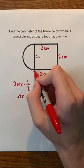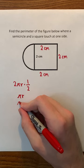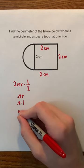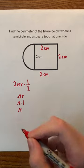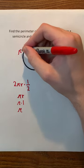Therefore, its radius must be 1 centimeter. So, we can just substitute 1 for r to end up with π times 1, which is just π. This means that this length right here must be π centimeters.